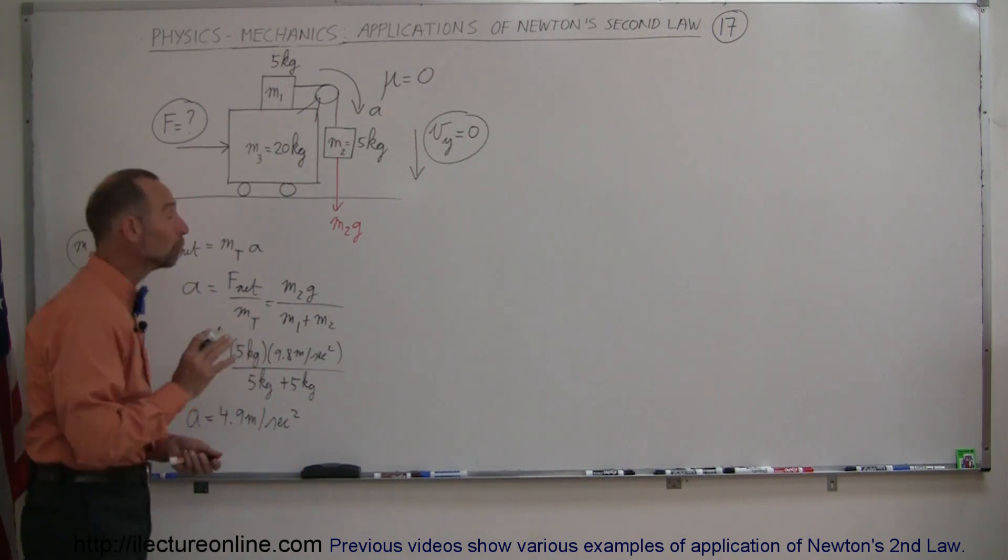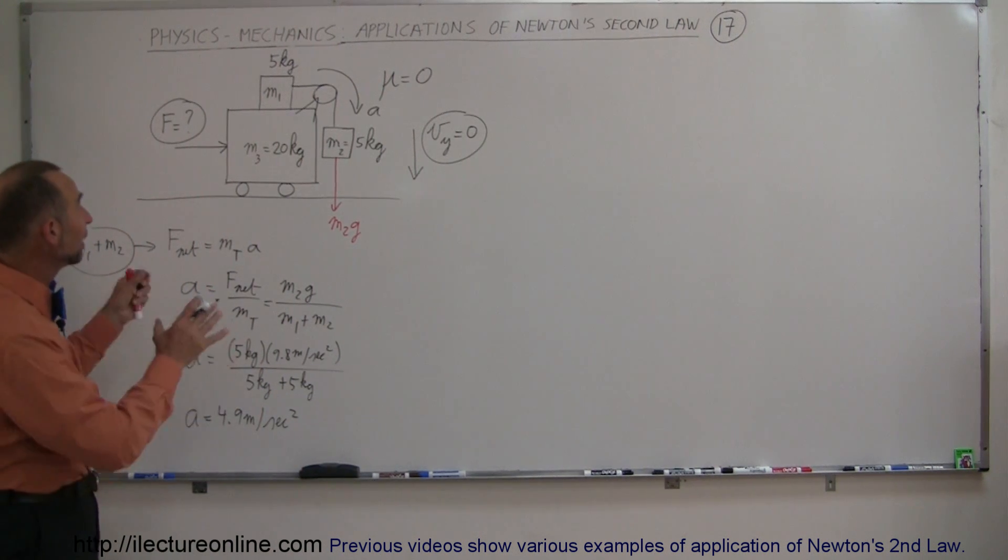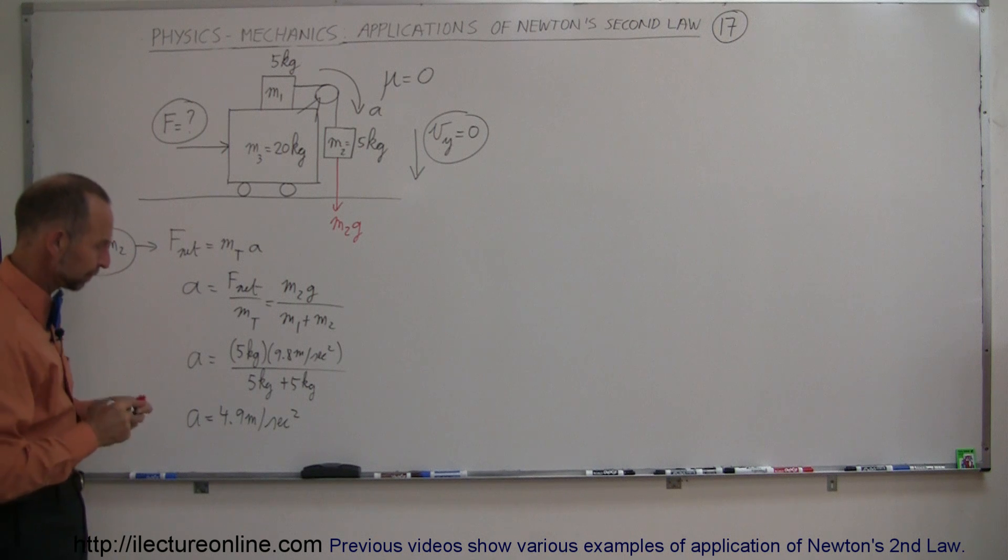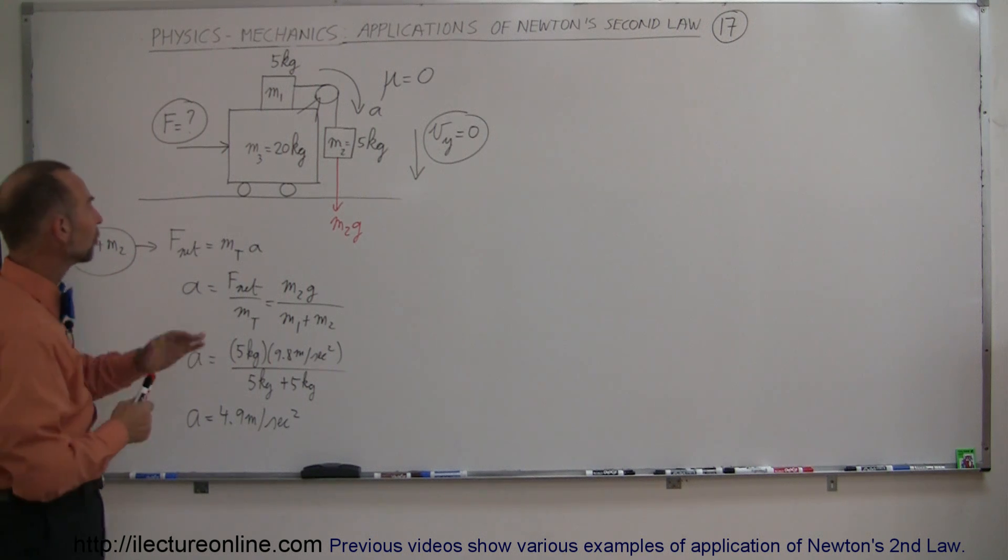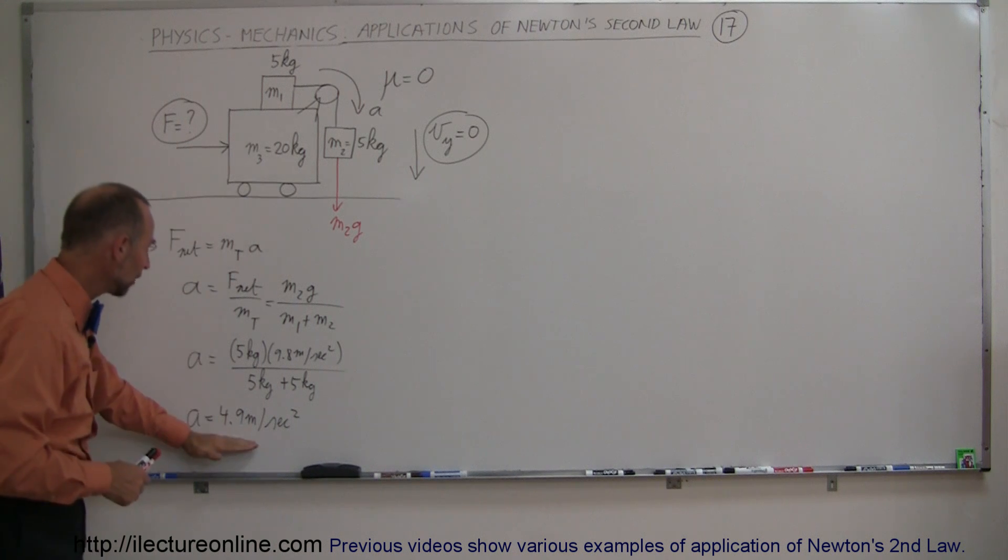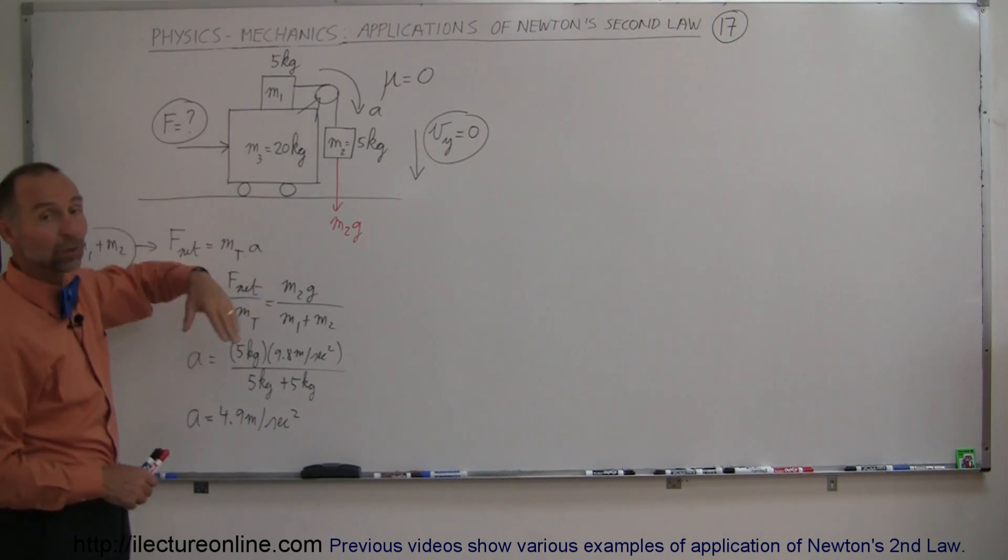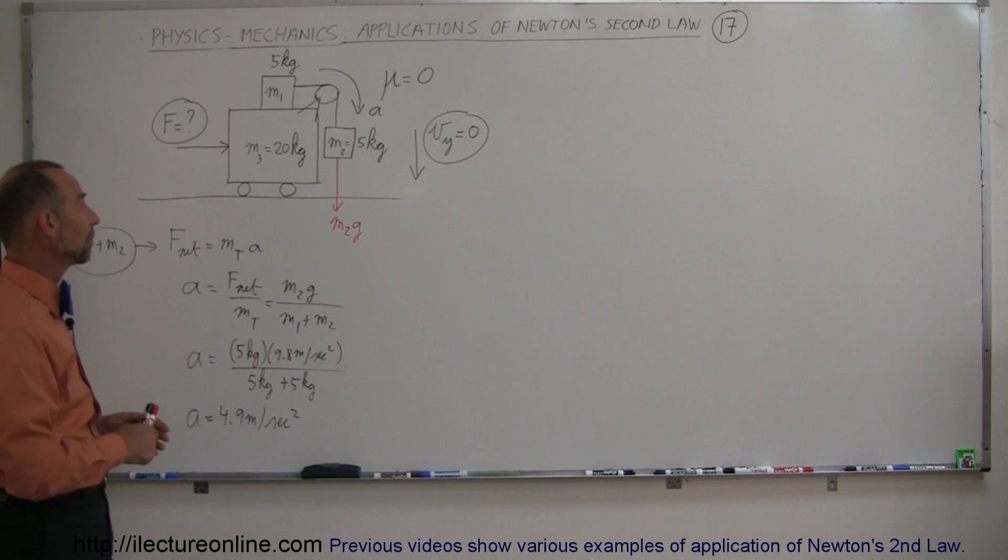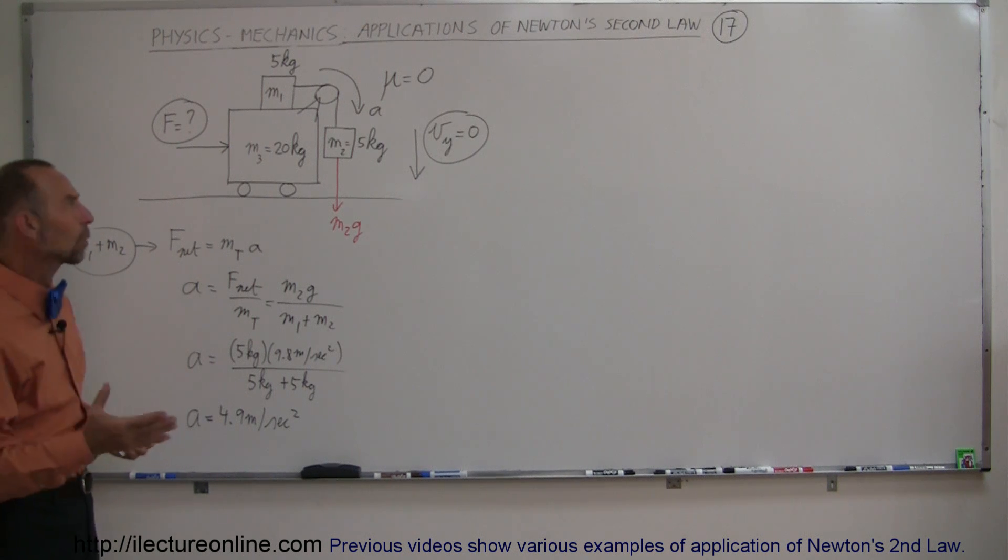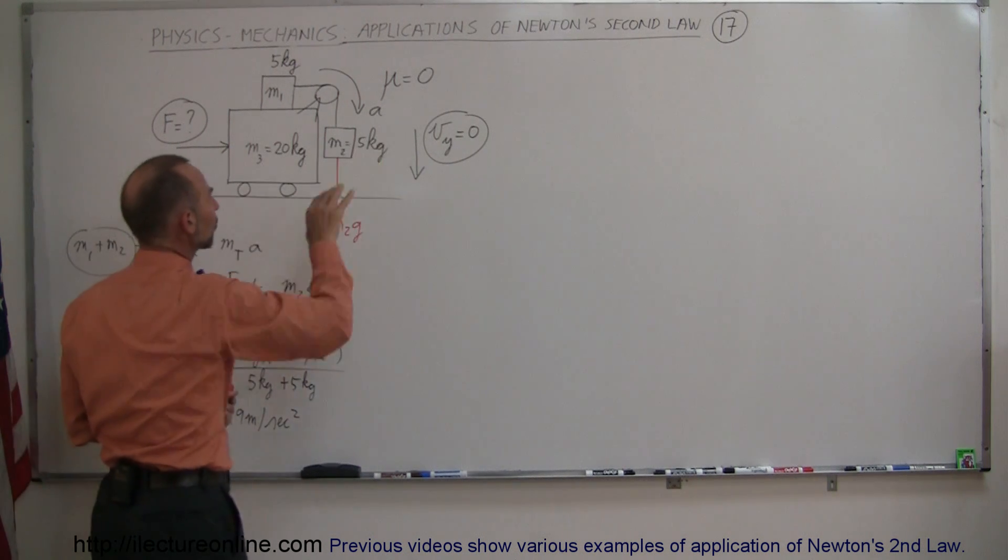So that's the acceleration both M1 and M2 would have if M3 stayed stationary. But we're going to push against M3 to make it accelerate at the same acceleration as this, which means M1 will not move relative to M3.